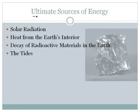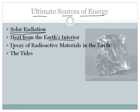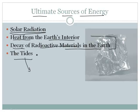First of all, what is the ultimate source of energy for the world? Ultimately, the vast majority of our energy comes from solar radiation — the energy from the sun shining on the Earth. You can also get some energy from the heat from the Earth's interior or the decay of radioactive materials in the Earth. There's also energy in the tides, and interesting devices are now being designed to use tidal gravitational energy and convert it into electricity. Our goal almost always is to convert things to electricity, because electricity is the most useful of all energies in our modern society.